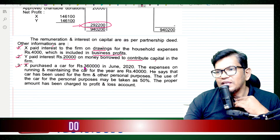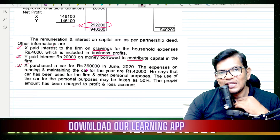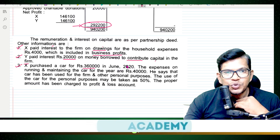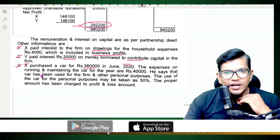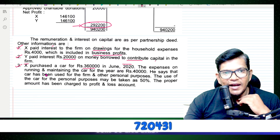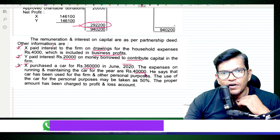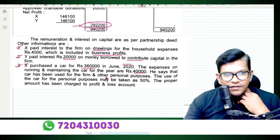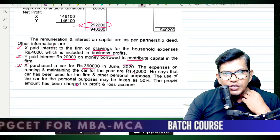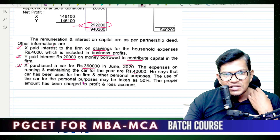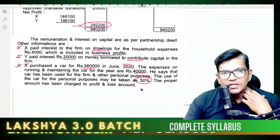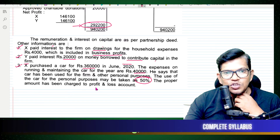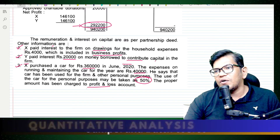X purchased a car for 3,60,000 in June 2020. The expenses on running and maintenance of the car for the year are 40,000. He says the car has been used for the firm and other personal expenses. The use of the car for personal purpose may be taken as 50%. The proper amount has been charged to the profit and loss account.